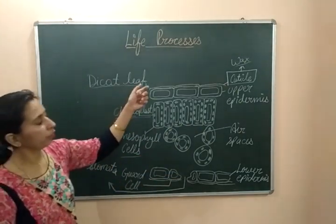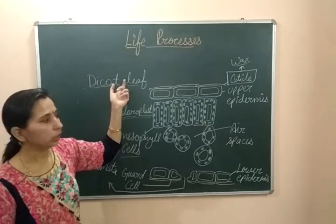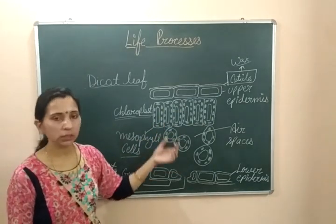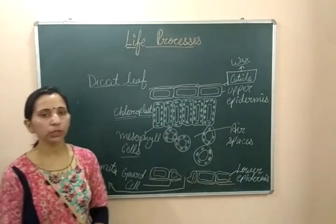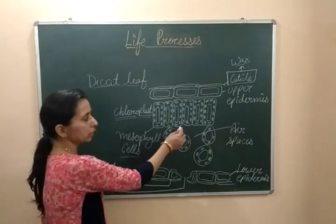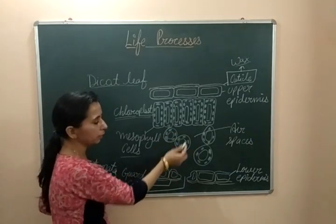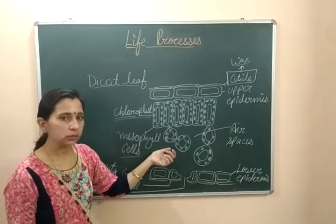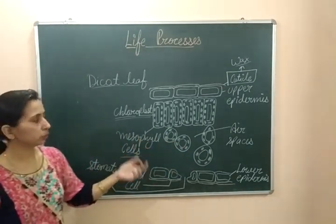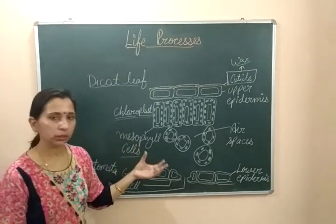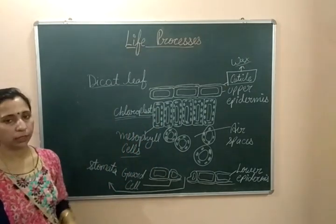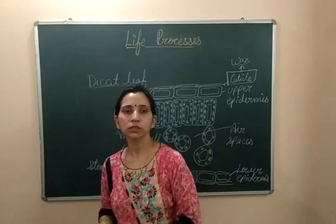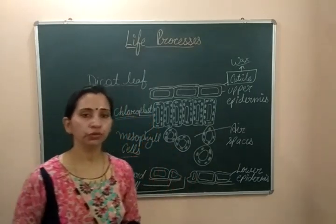Let's take a quick revision. The dicot leaf has upper epidermis and lower epidermis. In between these two epidermal layers, mesophyll cells are present, arranged into palisade and spongy forms. Inside the mesophyll cells, the green pigmented organelle chloroplast is present. Inside the chloroplast, chlorophyll takes part in photosynthesis, by which the plant is able to form its food. That's all about the autotrophic nutrition. In the next video we will discuss about heterotrophic nutrition. Thank you.